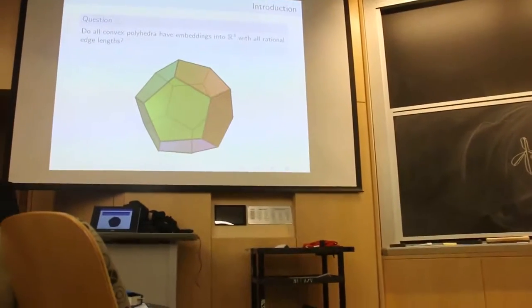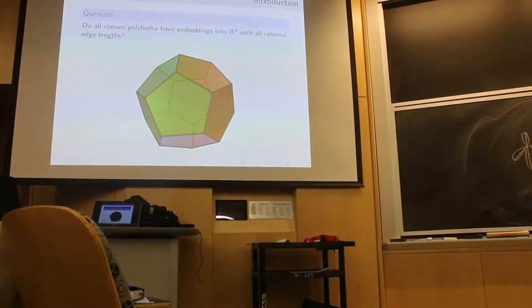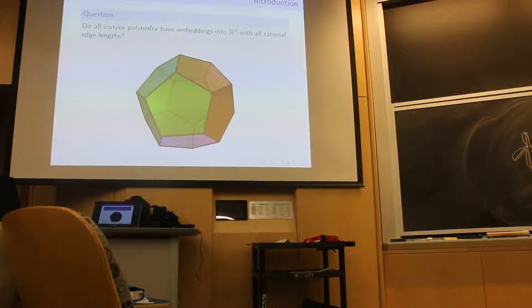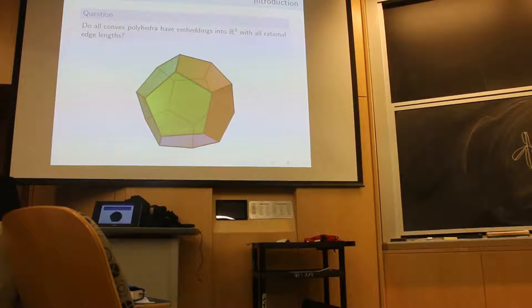We define an embedding of a polyhedron to be another polyhedron which is combinatorially equivalent to it. Informally, this means that they have the same structure. For example, any four points in three-dimensional space will form an embedding of a tetrahedron, even if they don't all have the same distances, because the polyhedron that they generate has the same structure as that of a tetrahedron.